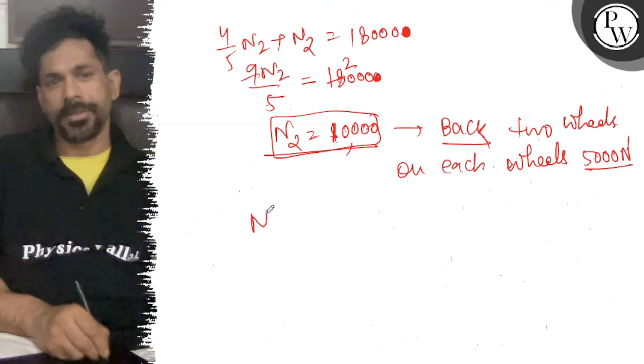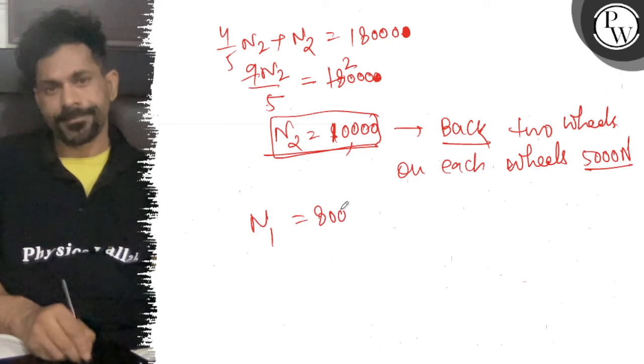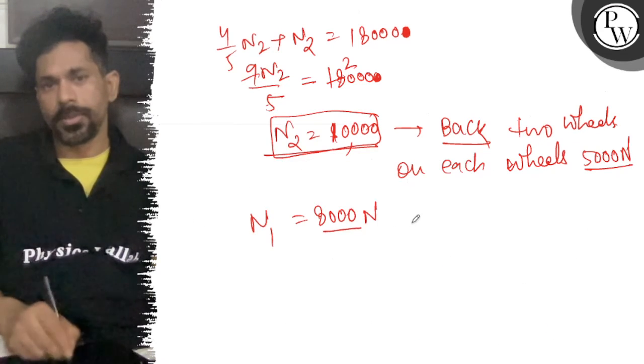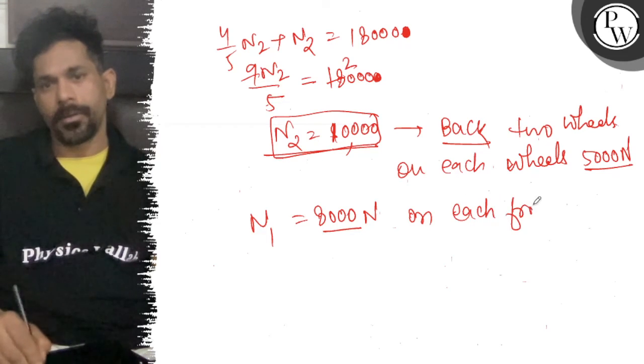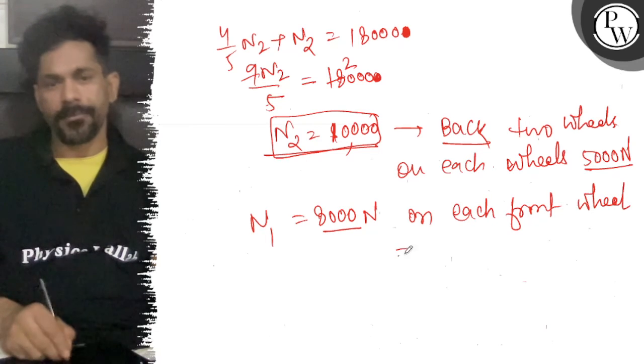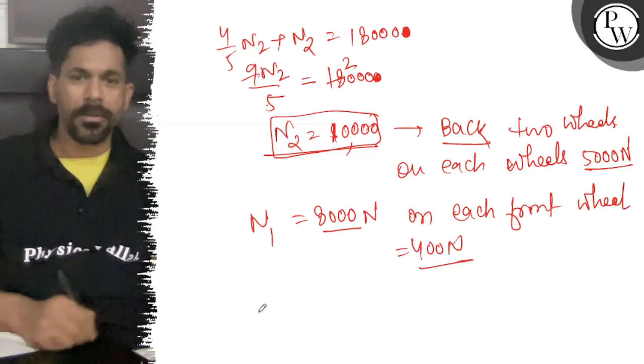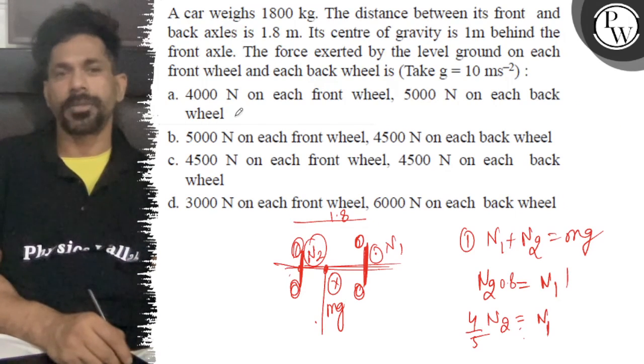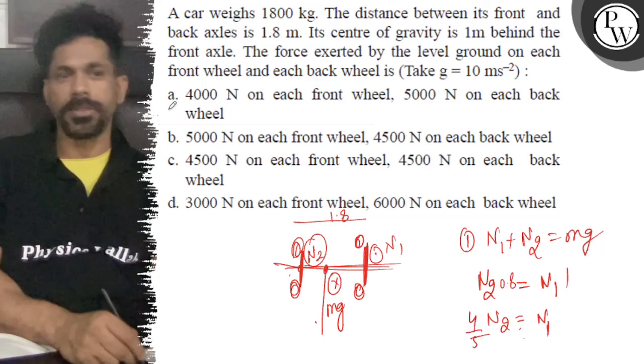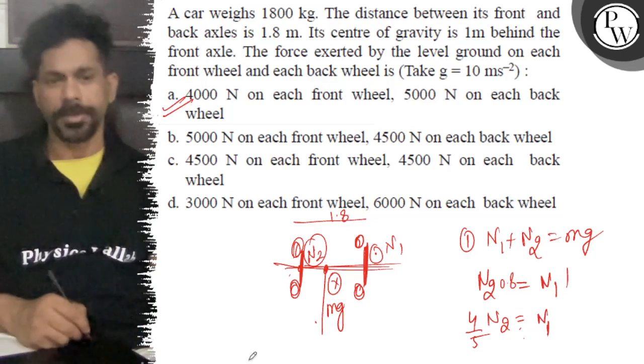So on each front wheel, that will be equal to 4,000 newton. So the right answer of this question is 4,000 on each front wheel and 5,000 on each back wheel. The option is correct. All of this.